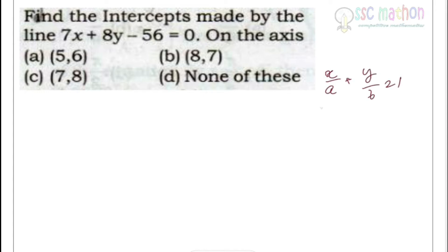How to prove it? If you ask, I will solve it in another question. Now, for our equation: 7x + 8y = 56 becomes x/8 + y/7 = 1. On the axis, this gives us intercepts at (8, 0) and (0, 7). Hence, option B is the correct answer.